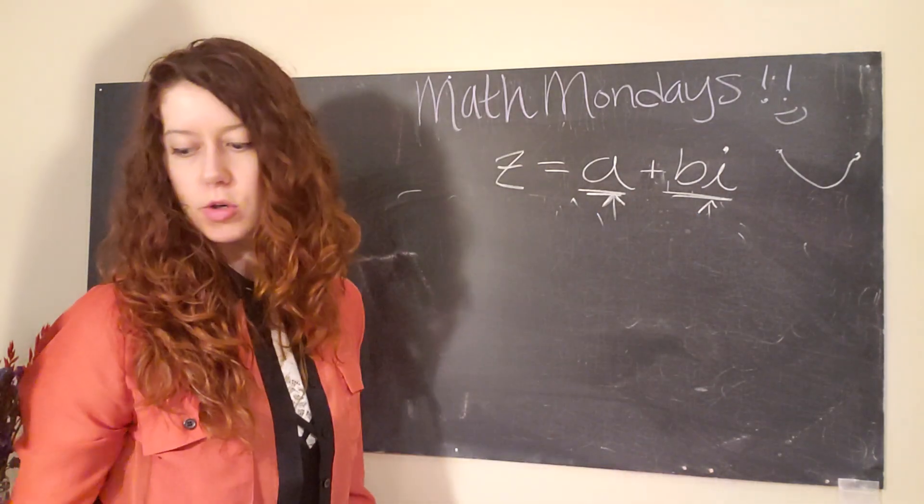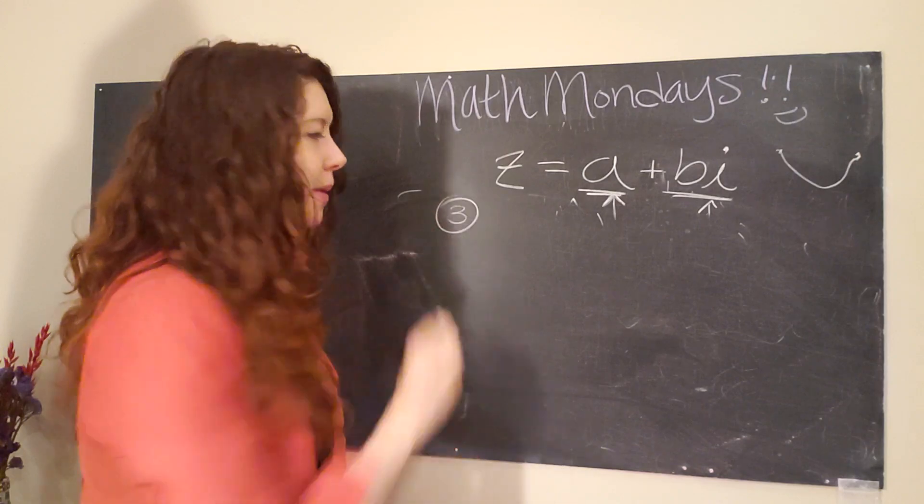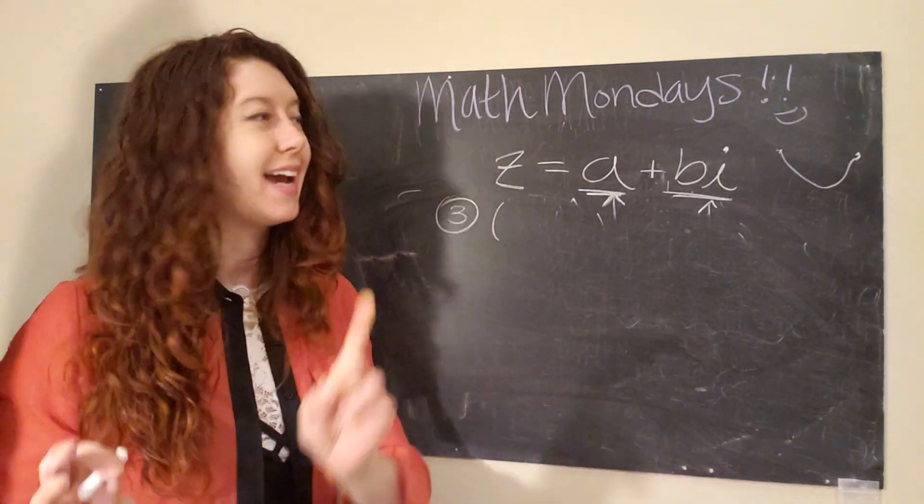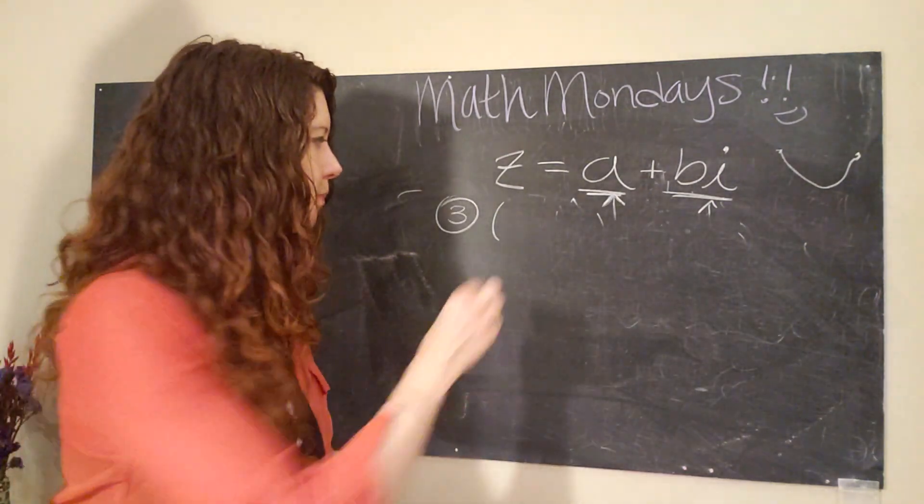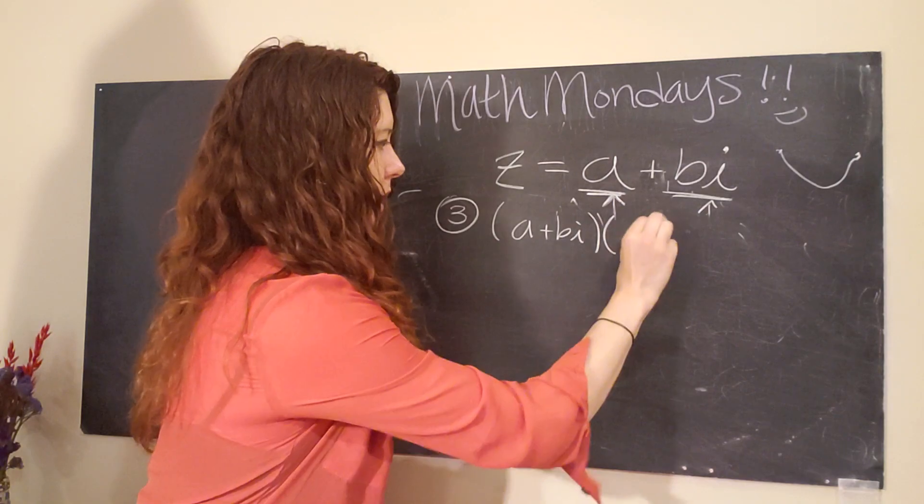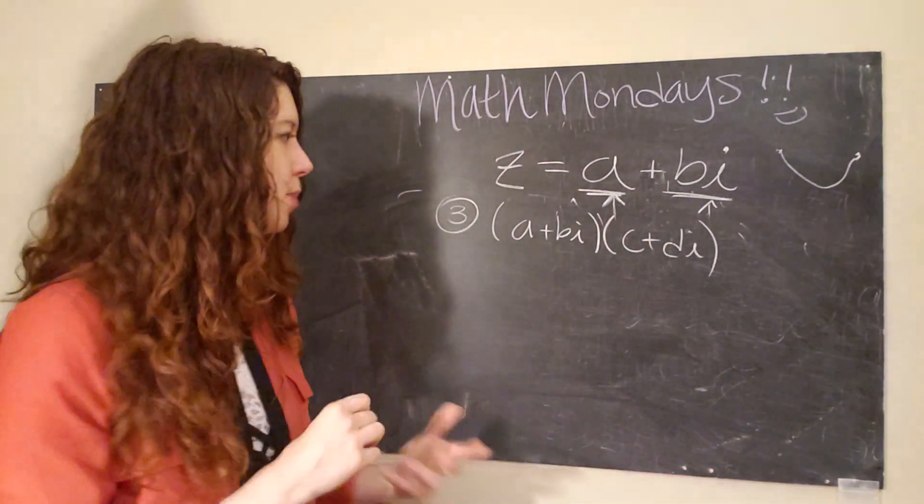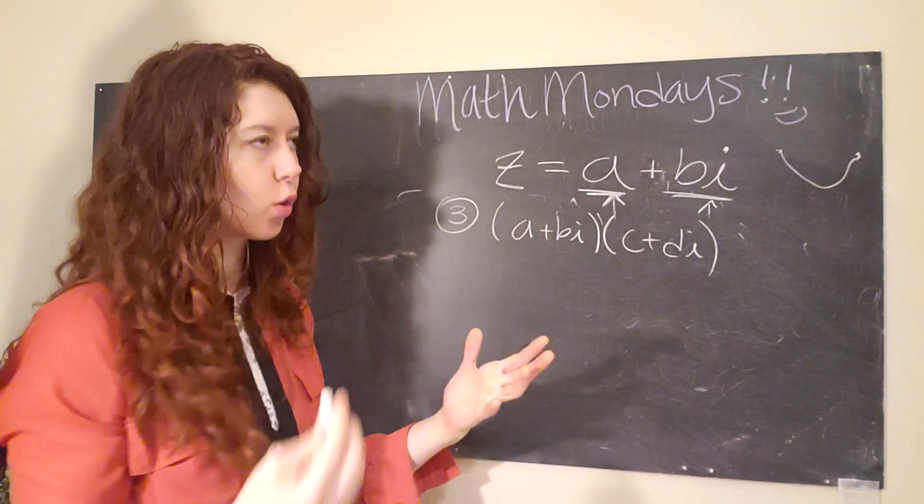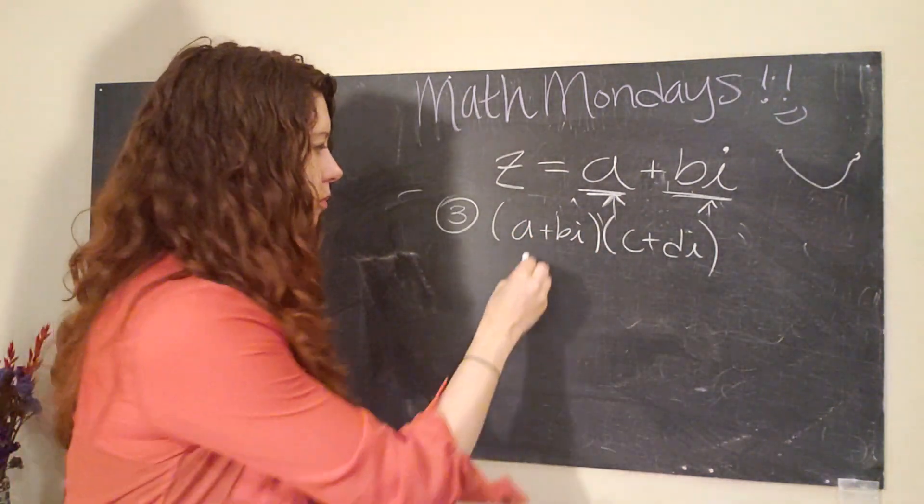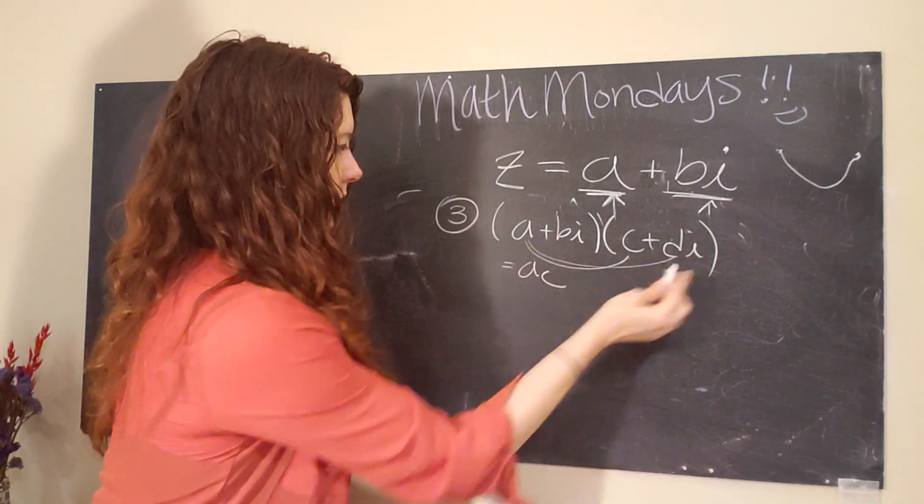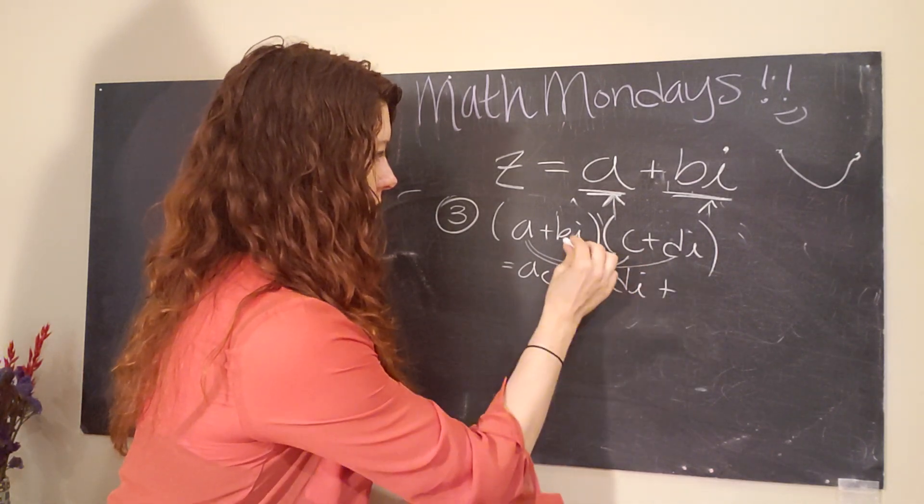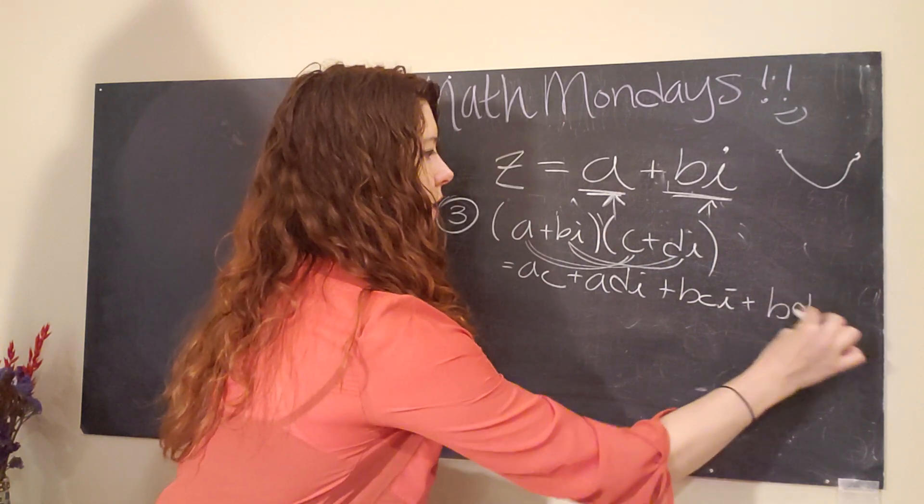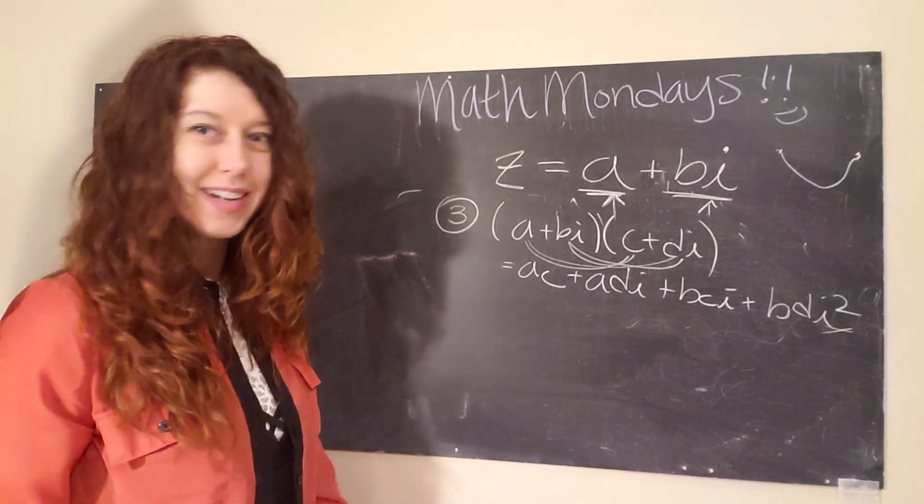What about multiplication? Multiplication gets a little bit tricky, but only because it requires us to be diligent and to go slow so that we make sure we're getting all the pieces mixed together right. So let's say we have a plus b i times c plus d i. So just like we do when we're multiplying polynomials together, we have to make sure that we get the right mixing. In other words, we have to make sure that all of the terms are multiplied together. So we want to do a times c: ac, and then a times d i: adi, plus bci, plus bdi squared.